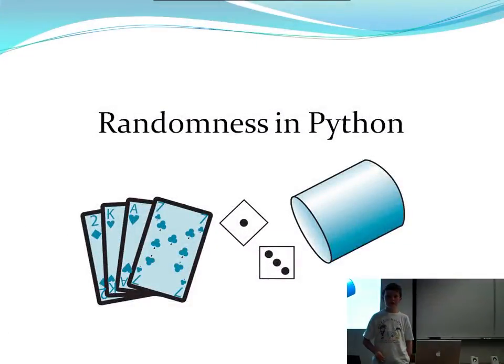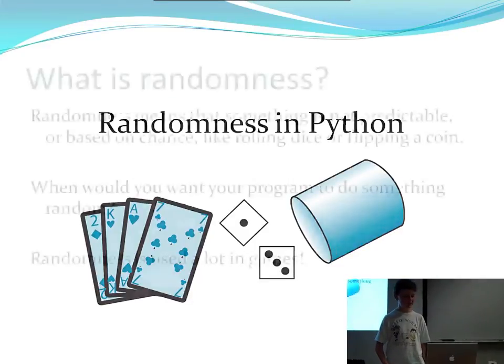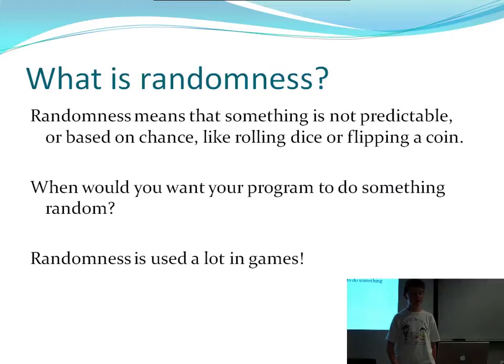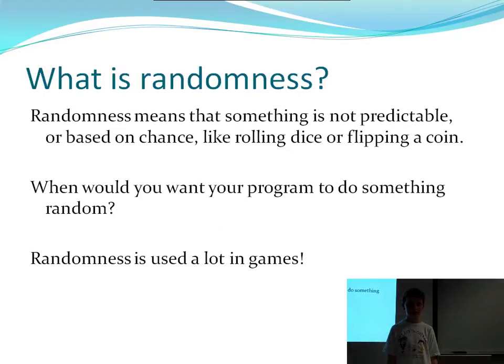One great thing to learn while you're programming is called randomness. If you don't know what randomness is, here's a quick description. Randomness means that something is not predictable or based on chance, like flipping a coin or rolling dice. As you can see, randomness is used a lot in games.